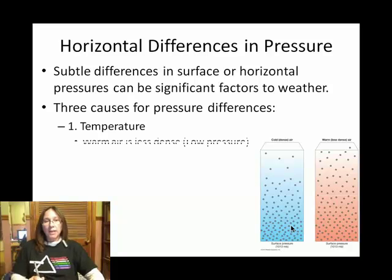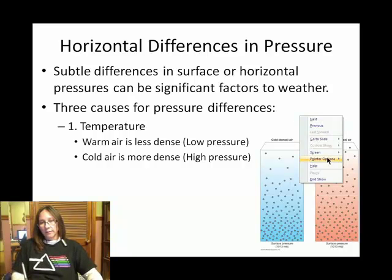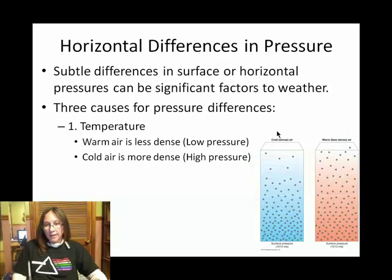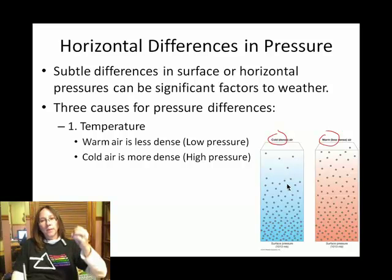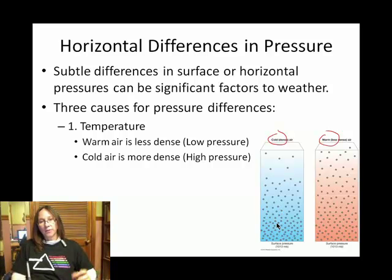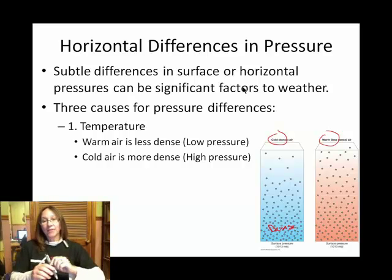The first way is a difference in temperature. We have two columns of air here — a cold column of air and a warm column of air. One of the things about gases when they're cold is that they tend to settle down. So this cold column of air has densely packed air particles down here.